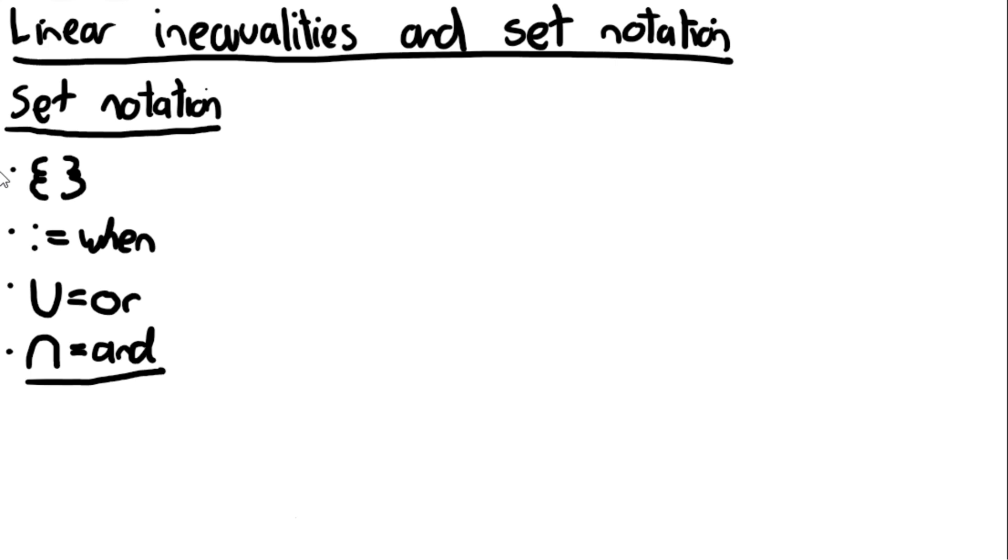So let's write in set notation that 3 is less than X. So the way we do this is, first of all, we open a bracket like this. And then we say X is a solution when 3 is less than X. And then we close the bracket like this. And that is how you put 3 is less than X in set notation.